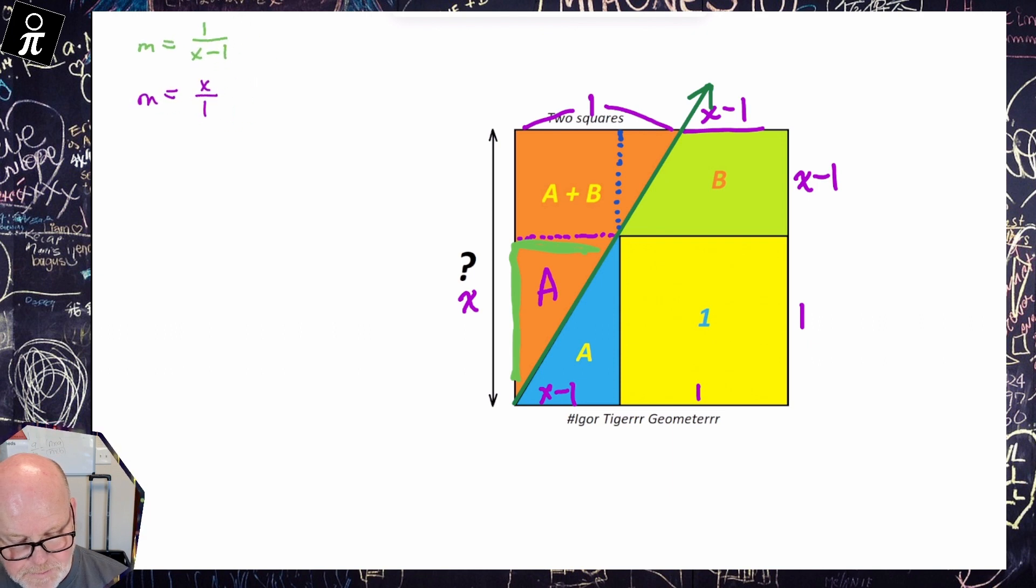I've got one way to describe the slope is one over X minus one, the other way is X over one, and those are equal. So I've got one over X minus one is equal to X over one.